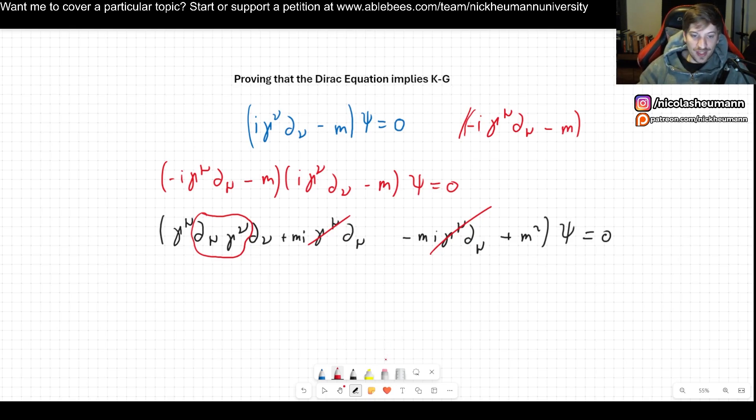For that reason I can now commute the gamma with our derivative operator. But only commute when you are aware of how they commute. That's one of the most classic mistakes people make when first learning QFT.